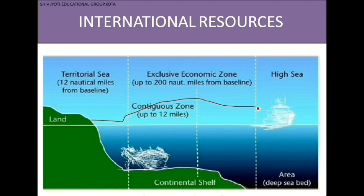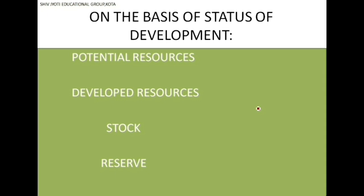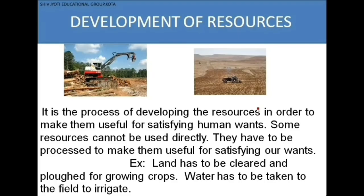On the basis of status of development, we have potential resources, developed resources, stock, and reserve. Development of resources is a process of developing resources to make them useful for satisfying human wants. Some resources cannot be used directly — human interference is important. For example, land has to be cleared and plowed for growing crops.